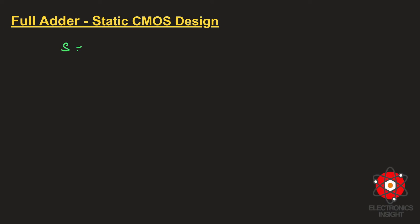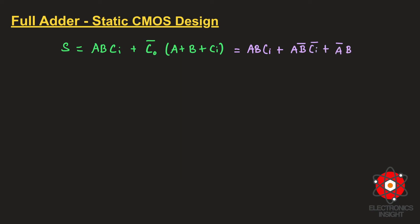The final sum expression in terms of carry out will be: S = a·b·ci + C₀_bar·(a + b + ci). This is equivalent to the expanded expression: S = a·b·ci + a·b̄·c̄i + ā·b·ci + ā·b̄·ci, which we will now verify.